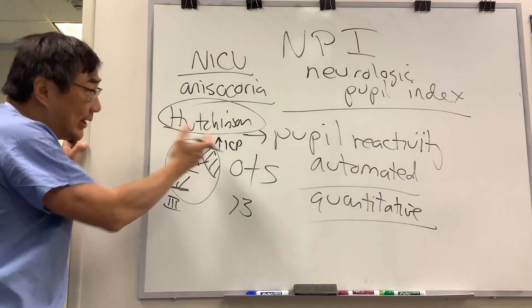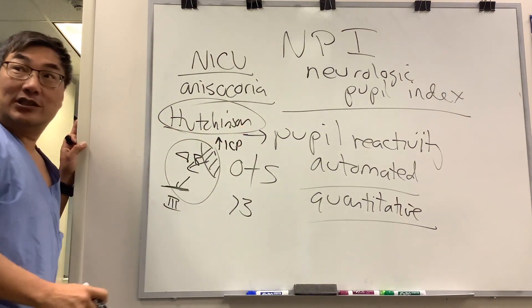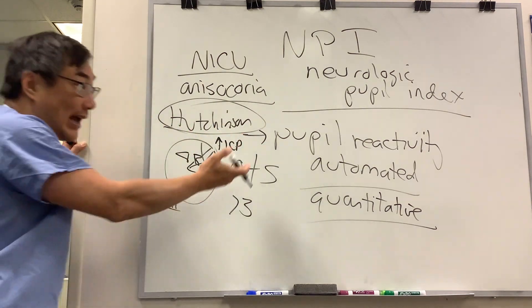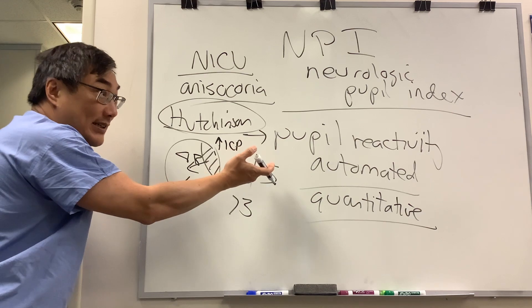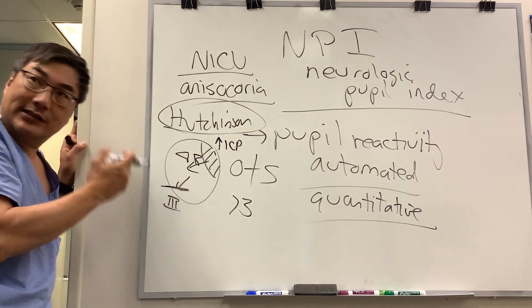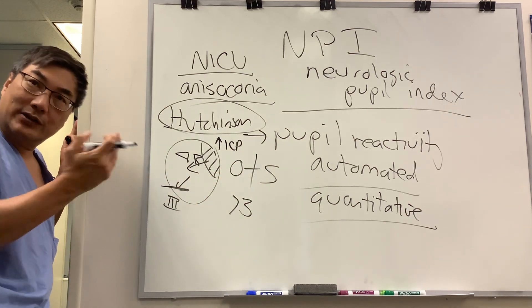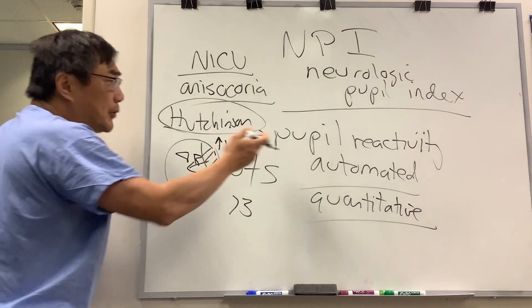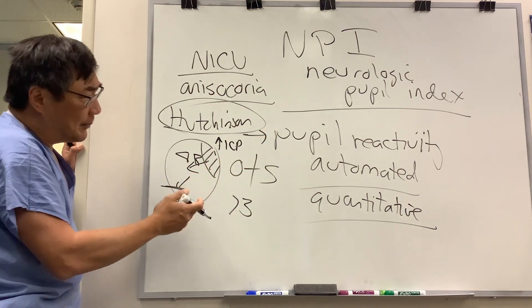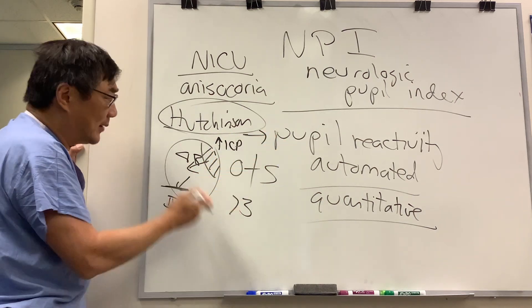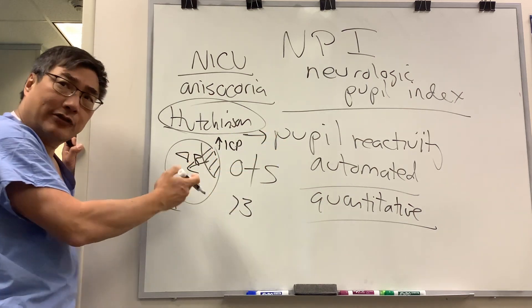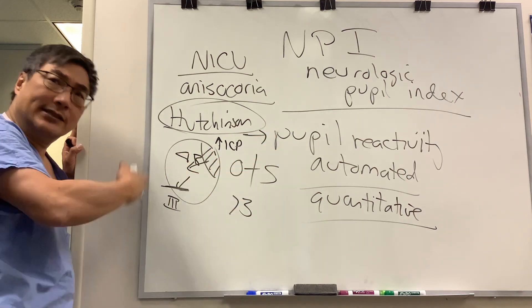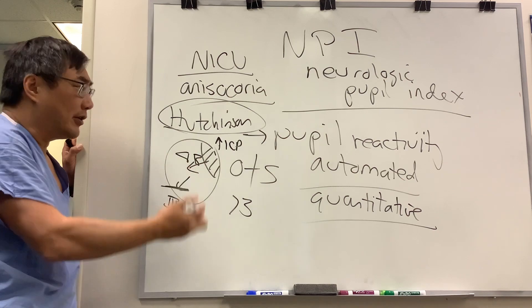Normally you can see the Hutchinson pupil without a machine, because the anisocoria is the key sign. But pupil reactivity by itself can also predict intracranial lesions, edema, etc.